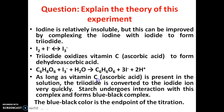As long as vitamin C, that is ascorbic acid, is present in the solution, the triiodide is converted to the iodide ion very quickly. In the next step, starch undergoes interaction with the resulting solution and forms a blue-black complex. This blue-black color is the end point of the titration.